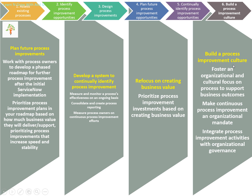Step six: build a process improvement culture. Foster an organizational culture focused on process improvement to support business outcomes. People should come forward and say 'this isn't working, let's improve it.' For example, reimbursement used to require filling a paper form, putting it in a drop box, getting it signed elsewhere — now it's all done through a portal. Make continuous process improvement an organizational mandate. That's why quality assurance and QMS teams exist. Integrate process improvement activities with organizational governance.